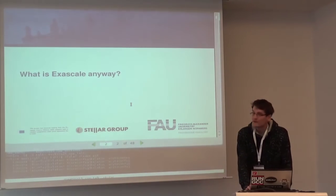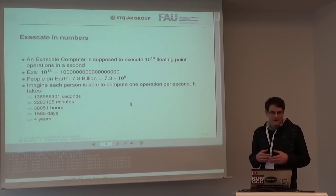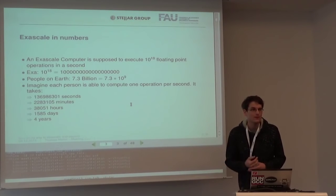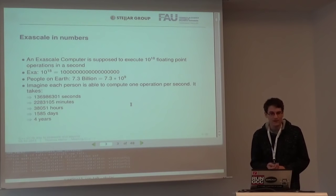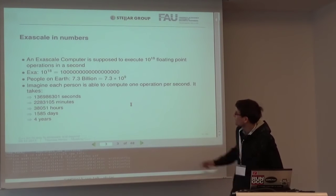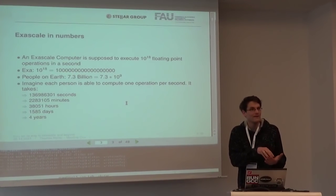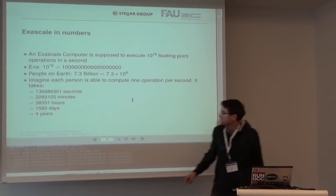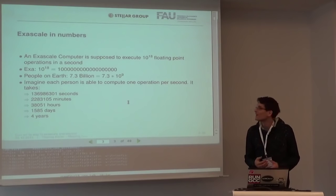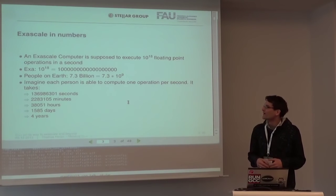What is this exascale thing? Exa is a number with 18 zeros, and an exascale computer is supposed to execute 10 to the power of 18 floating point operations per second. That's a huge number. If you take every person on earth — 7.3 billion people, a number with nine zeros — and give all of them a calculator letting them execute one operation per second, it would take all of mankind four years to do the same calculation that this exa-flop computer does in one second.